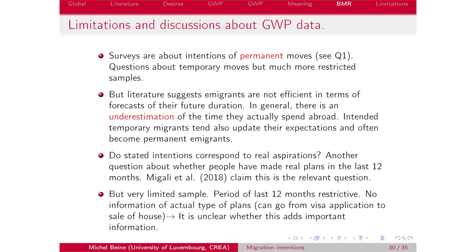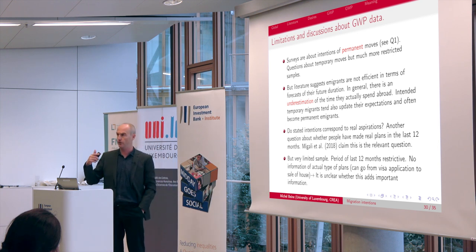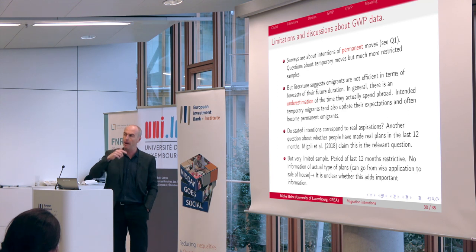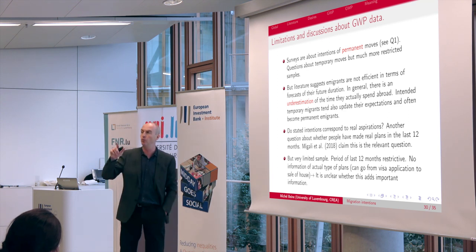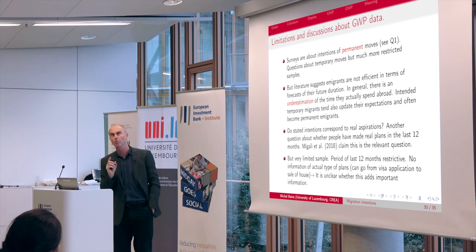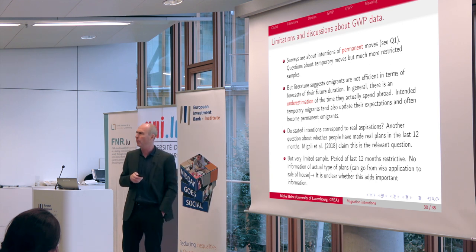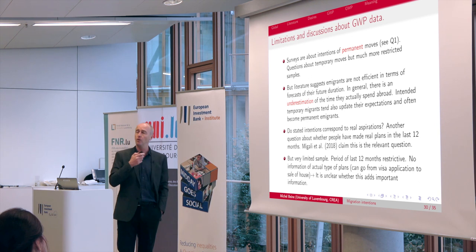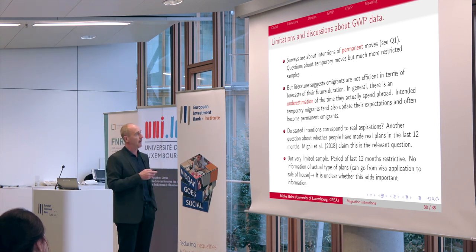This is evidence that intended migrants are partially rational — at least they process existing information quite well. I want to also take a stance and emphasize a couple of limitations of the Gallup data. First, you might wonder whether the question on permanent moves is too restrictive — the question asks if you would like to move permanently. But the distinction between permanent and temporary moves is not that clear, since the literature tends to find that migrants underestimate the time they will spend abroad.